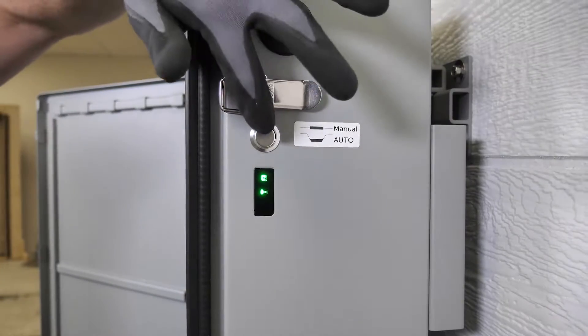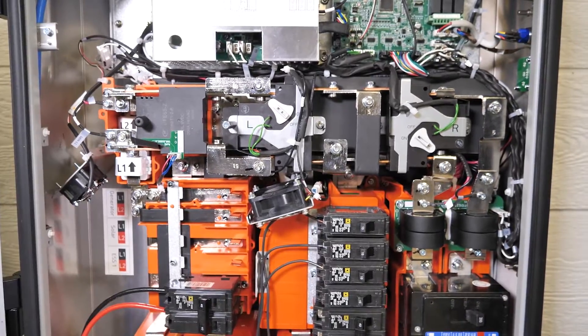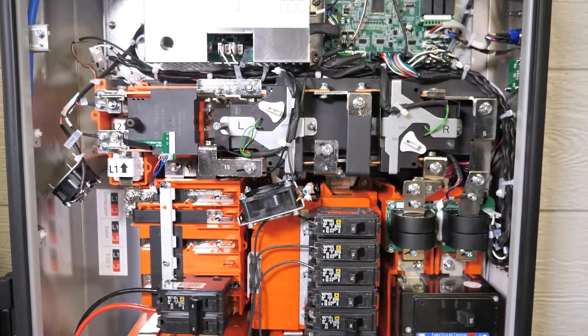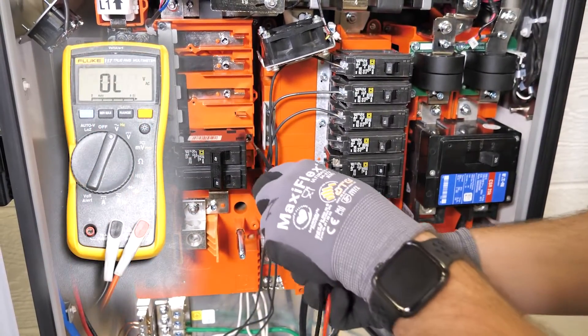Press the auto button on the side of the smart box. After the initialization sequence is complete, check the voltage on the ESS breaker.